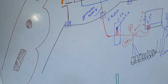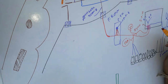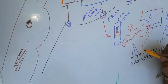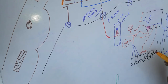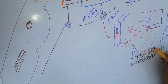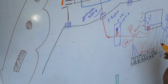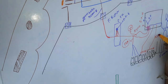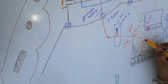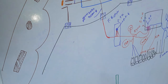The posterior superior alveolar nerve supplies the molars except the mesiobuccal root of the first molar. On its way, the infraorbital nerve gives off two more branches: the middle superior alveolar — which supplies the premolars and the mesiobuccal root of the first molar — and the anterior superior alveolar nerve, which supplies the anterior teeth.